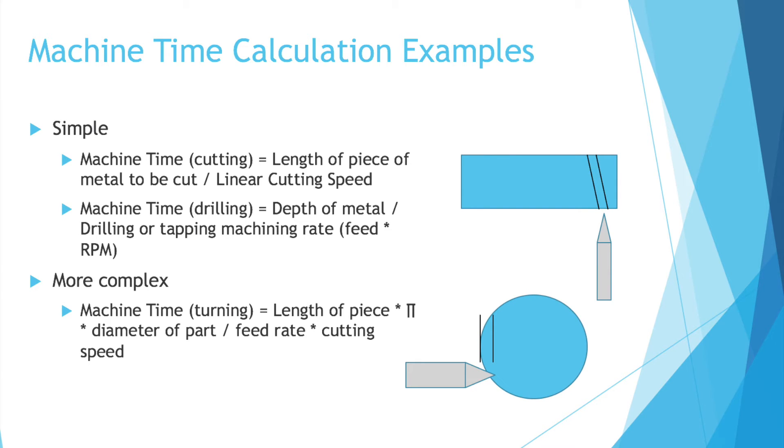Another simple example would be drilling. You would take the depth of the metal divided by the drilling or tapping machining rate, which is the feed rate times the number of revolutions per minute. So say you need to drill through something three inches thick, but your drilling rate is only half an inch per minute. It's going to take you six minutes to get through that piece of metal. And the depth of metal, it doesn't just have to be metal. It can be wood, plastic, any other material. And that feed times RPM, to put that into more simple terms, imagine the feed of your machine is 0.01 inches per revolution. That's the feed rate. So 0.01 inches deeper every time it rotates once. And say your RPM is 50 revolutions a minute. That feed rate times your RPM would say every minute you're going to drill down a depth of 0.5 inches.